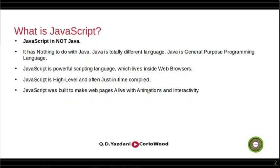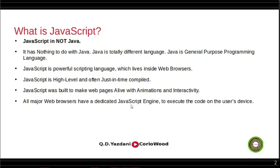If you turned off JavaScript around 2010–2015, you wouldn't see any video on YouTube. All major web browsers have a dedicated JavaScript engine to execute code on the user's device. You don't need any special software — JavaScript lives inside the web browser. If any website tells you to download software for JavaScript, they're wrong and trying to run malicious code on your computer.